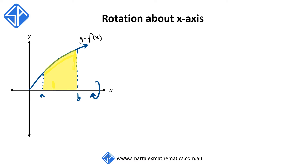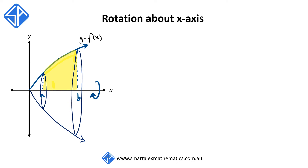The same idea can be applied to finding volumes of solids of revolution rotated about the x-axis. This time we've got a region bounded by the function y is equal to f of x, the x-axis, the lines x is equal to a and x is equal to b. If we rotate this region about the x-axis, we're going to form a solid that looks like this. This solid is made out of a series of very very thin cylindrical disks, this time in the vertical orientation. If we're able to find the volume of each disk going from a to b and add them up, we would again have the volume of this solid.